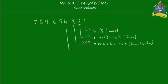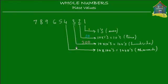The next one is 4, and it is in a place that's 10 times higher than the 100's place, because it's one place to the left of the 100's place. So this place is called the 1,000's place. That gives this digit 4 a value of 4 times 1,000, and 4 times 1,000 is 4,000.